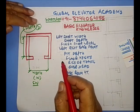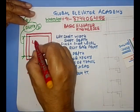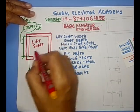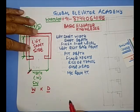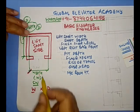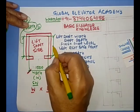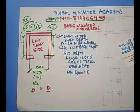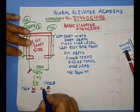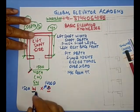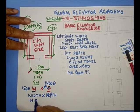So now there should not be any confusion about what is width and what is depth. Whenever you mention any lift shaft size, you should always mention the width first and depth later. So suppose we have 1500 width and 1400 depth, so how we will write this — we will write 1500 wide and 1400 deep. So width into depth, sometimes you call it wide into deep.